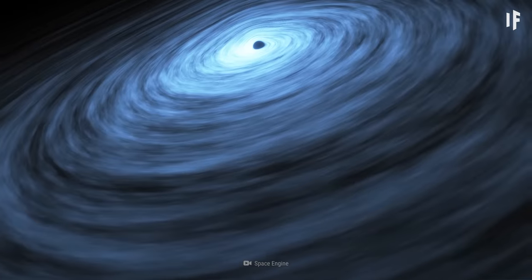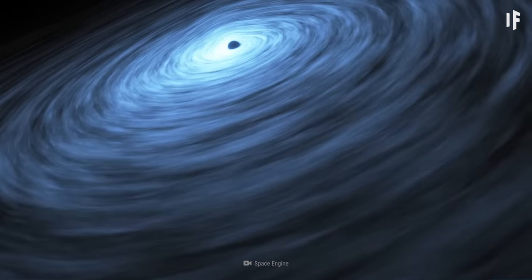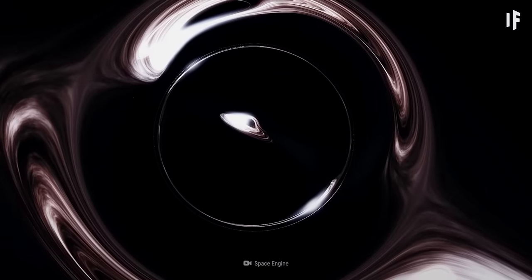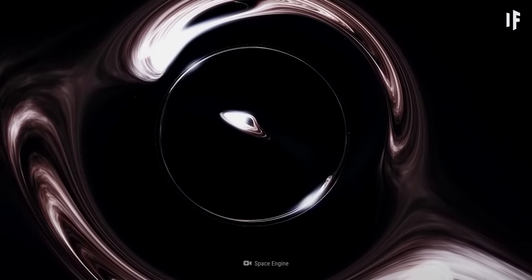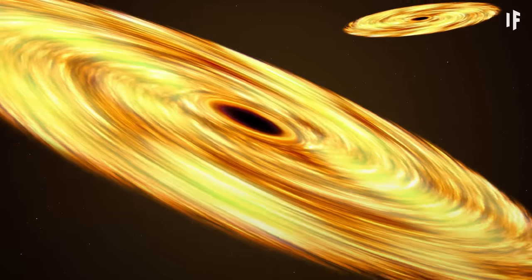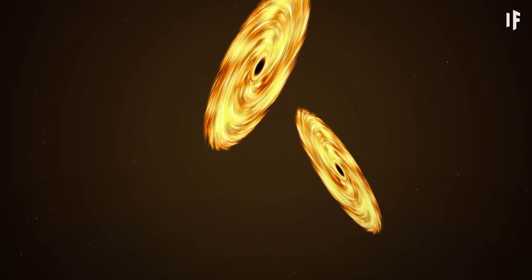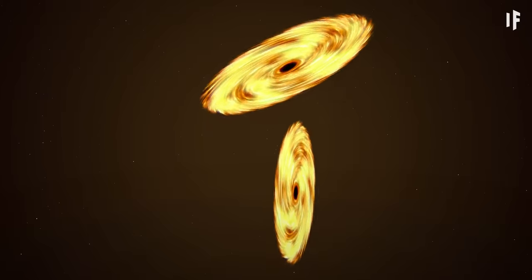These black holes have a mass of at least hundreds of thousands of times the mass of our Sun. But the thing is, they might never even collide at all. Two supermassive giants would get close to each other until they reached a gravitational balance and froze in their respective orbits.